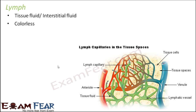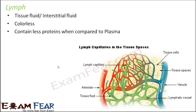Lymph is colorless, unlike blood which is red in color. It contains less proteins when compared to plasma. If you want to compare lymph with blood, it is almost like blood except that it does not have the RBCs — it only has the plasma. If you remember the centrifugation process of blood, plasma was colorless because it does not contain hemoglobin. So similar is the case with lymph. In fact, lymph is actually a small portion of plasma.